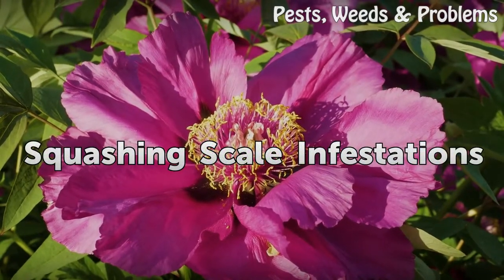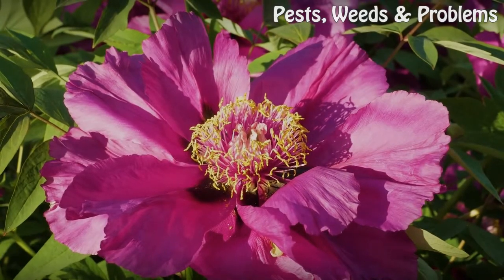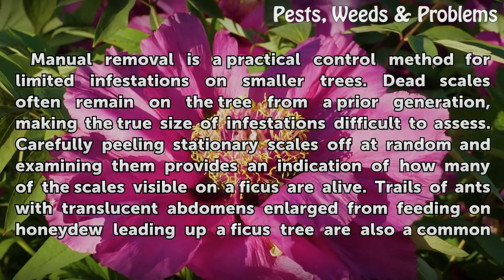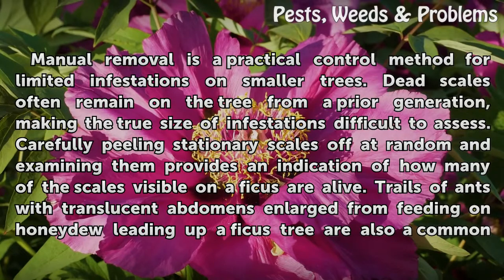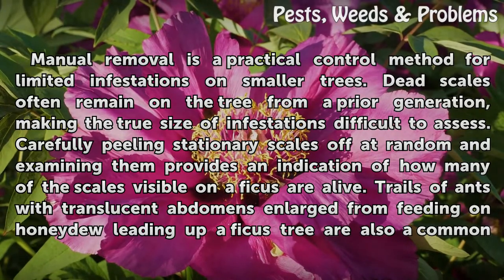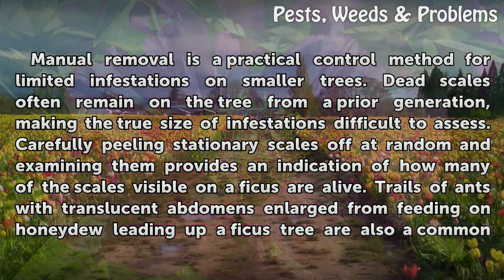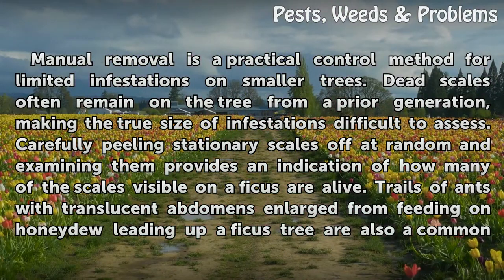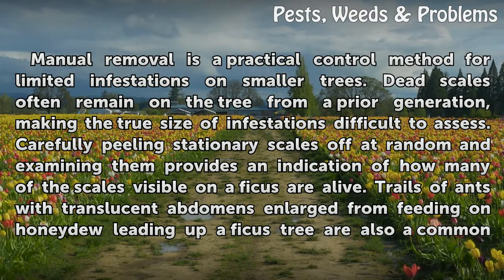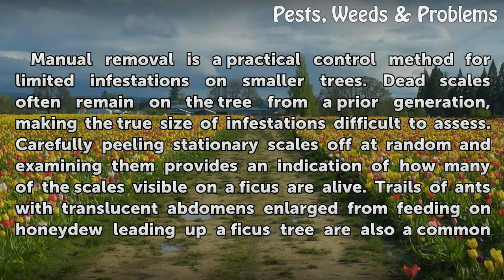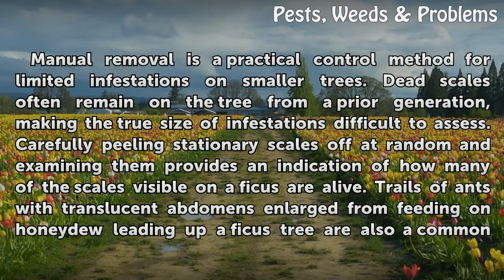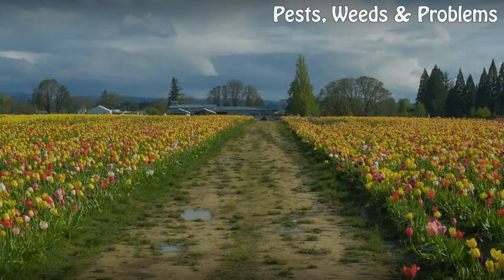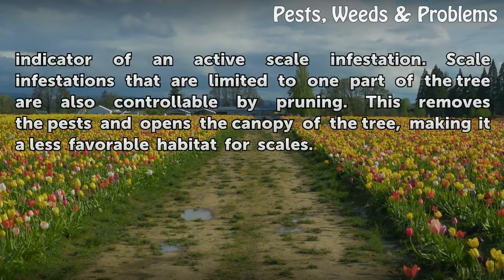Squashing Scale Infestations. Manual removal is a practical control method for limited infestations on smaller trees. Dead scales often remain on the tree from a prior generation, making the true size of infestations difficult to assess. Carefully peeling stationary scales off at random and examining them provides an indication of how many of the scales visible on a ficus are alive. Trails of ants with translucent abdomens enlarged from feeding on honeydew leading up a ficus tree are also a common indicator of an active scale infestation.